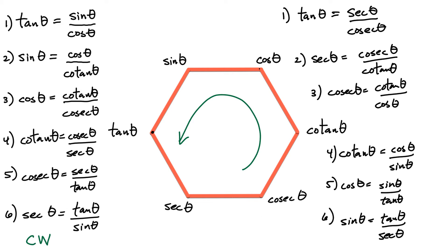And the last one going counterclockwise: sine of theta is simply equal to tangent of theta over secant of theta. Going around the hexagon in the counterclockwise direction gives us another six relationships, for a total of 12 trigonometric identities from one hexagon. Let's see what else we can do.